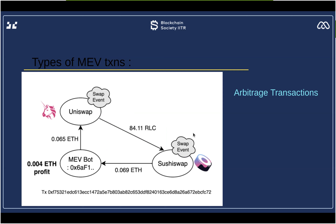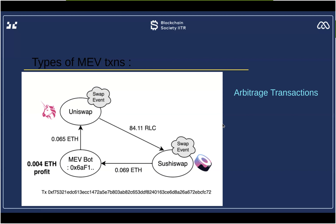The third and most classical type of MEV transaction is arbitrage. An MEV bot places a swap on Uniswap for 0.065 ETH worth of a token, swaps it with another token on SushiSwap, then swaps back to get 0.0690 ETH — exploiting the price difference between two DEXes. The profit was 0.004 here, but MEV bots scale these transactions massively to perhaps 65 ETH or 650 ETH, turning a tiny profit margin into free money through scale.